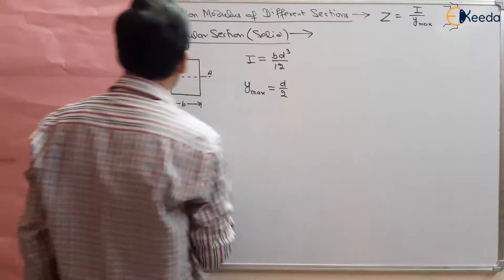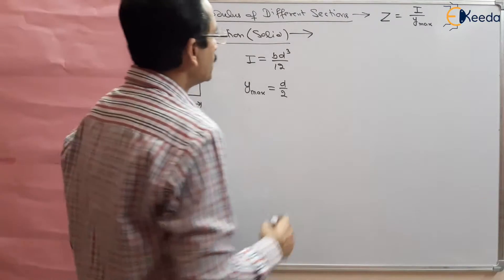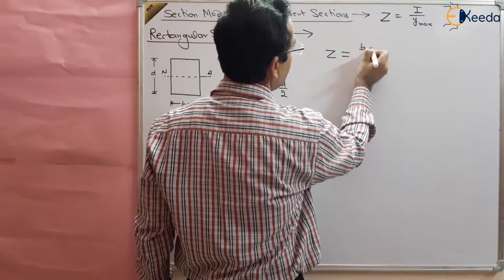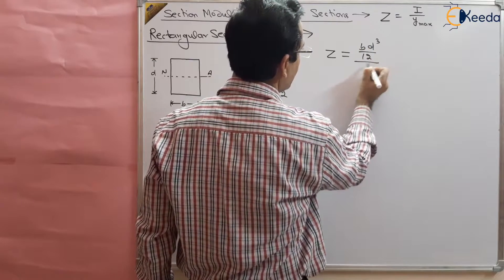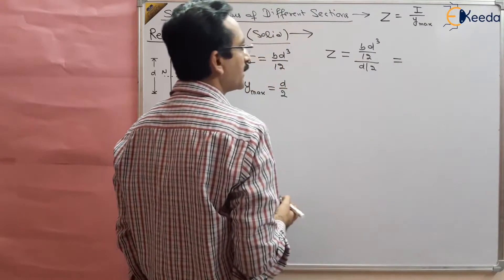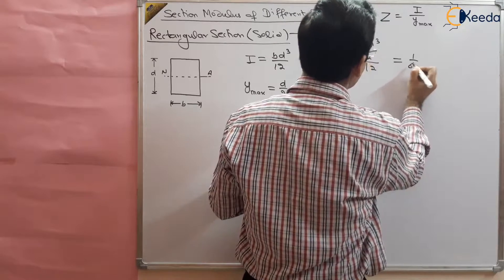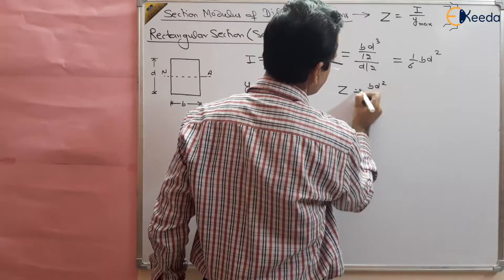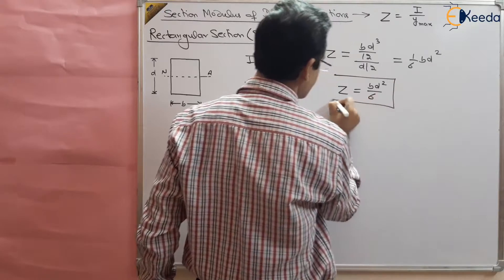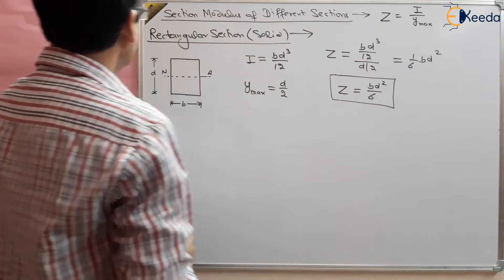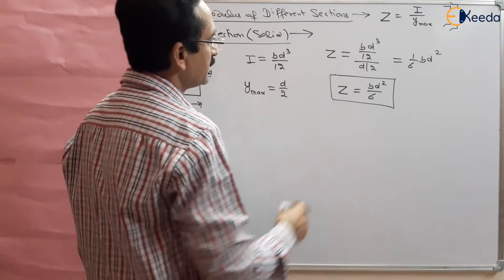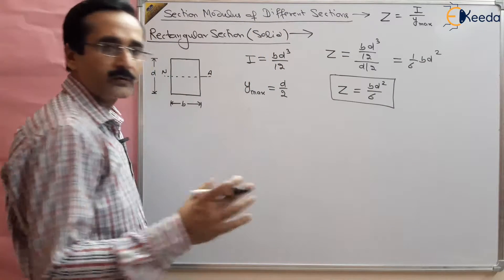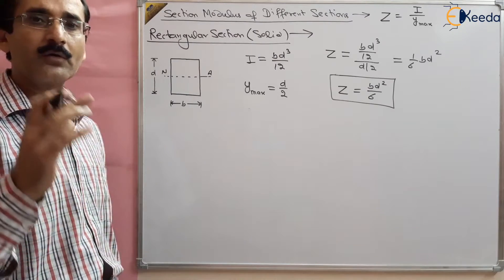So section modulus Z = I / y_max = (bD³/12) / (D/2) = bD²/6. You have to remember this — the section modulus for a rectangular section is Z = bD²/6. Now we want to find out the section modulus for a hollow rectangular section.